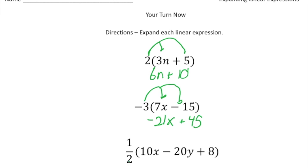And then finally, we have 1 half times 10x minus 20y plus 8. 1 half times 10x is 5x, minus 1 half times 20y is 10y, and then plus 1 half times 8 is 4. And that is the answer. How'd you do?